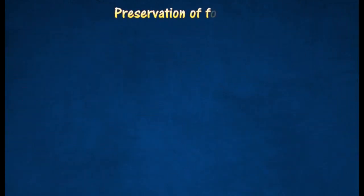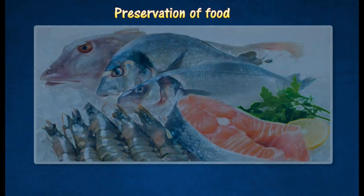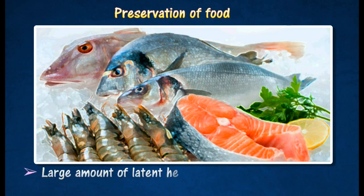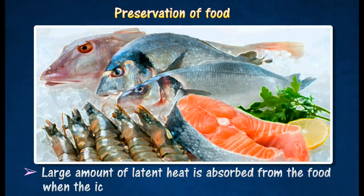Food such as vegetables and fish are preserved by ice to maintain their freshness for a longer period. This is because a large amount of latent heat is absorbed from the food when the ice melts.